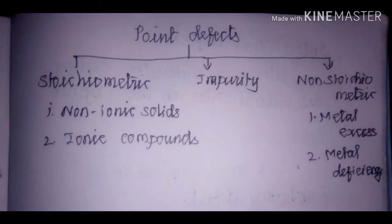Point defects are classified into three categories: stoichiometric defects, impurity defects, and non-stoichiometric defects. Stoichiometric defects are usually found in non-ionic solids and also in ionic compounds. Non-stoichiometric defects are classified into two categories: metal excess defects and metal deficiency defects. Impurity defects are usually because of impurities present in the solids.